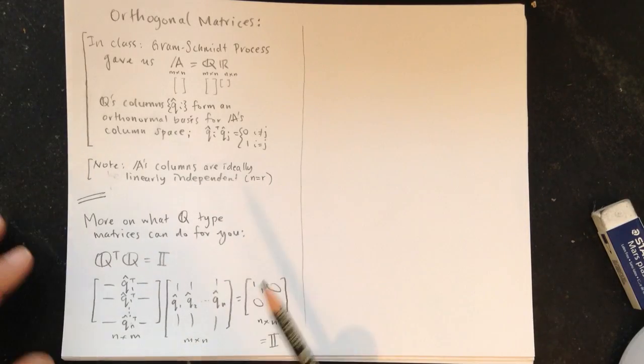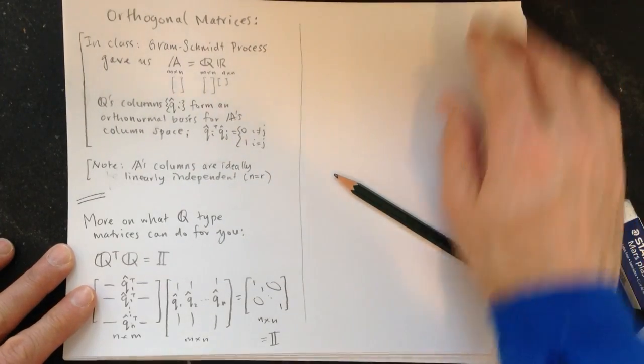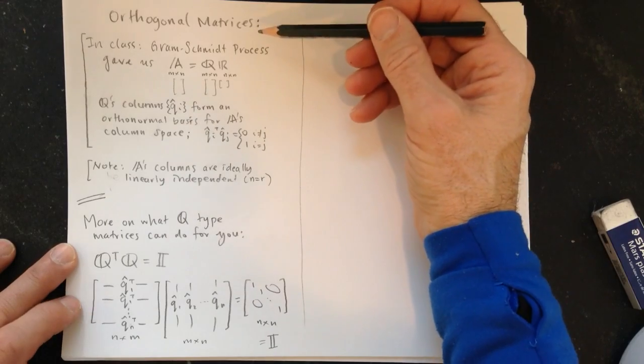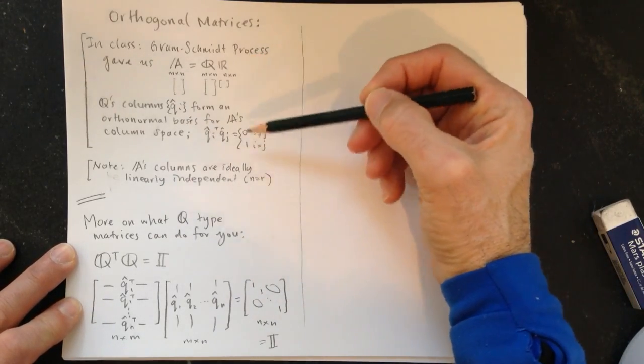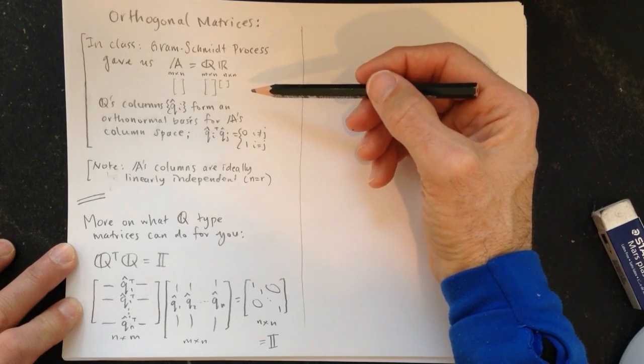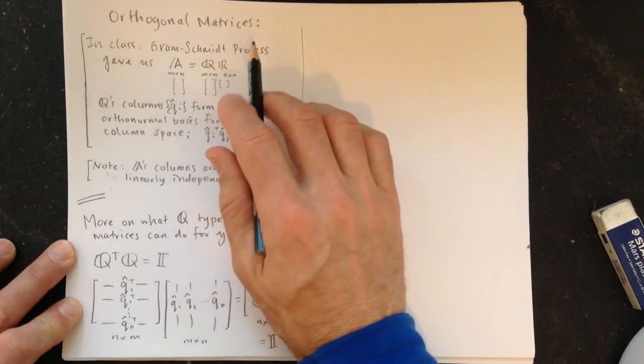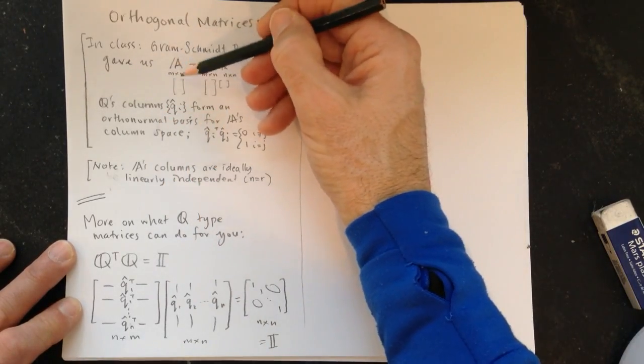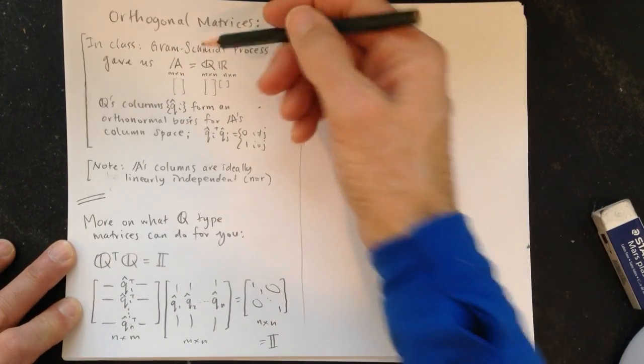Orthogonal matrices. This is a little webisode to add to the work we've done on the Gram-Schmidt process. Alright, so let's recap that first. So this is a special class of square matrices we're going to get to, but let's go through the QR decomposition of A. So we had this process in class where we start with the columns of A, and so they span column space by construction.